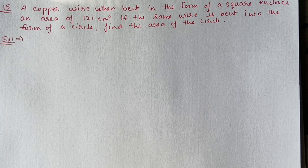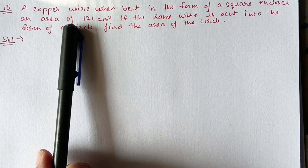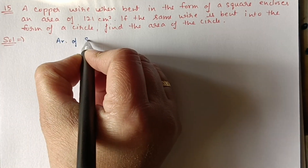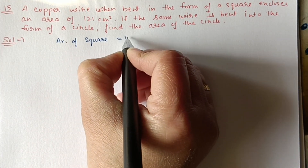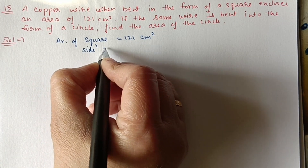Next, we have Question 15. A copper wire when bent in the form of a square encloses an area of 121 centimeter square. If the same wire is bent into the form of a circle, find the area of the circle. Since it is the same wire, the circumference of the circle and perimeter of the square will be the same. Area of square = side² = 121, so side² = 11², meaning side = 11 centimeter.